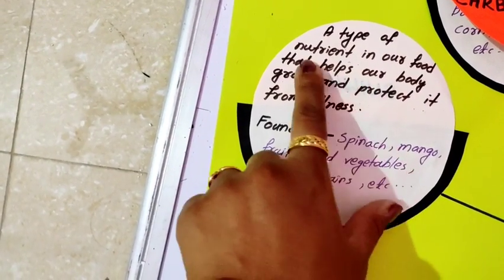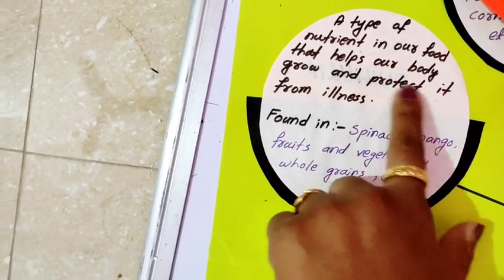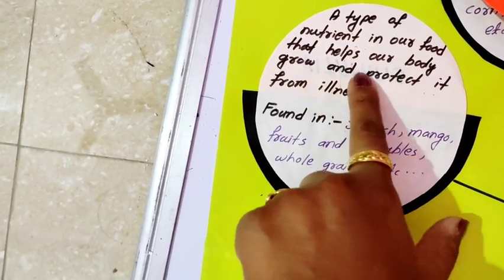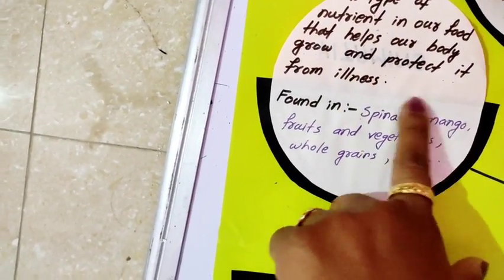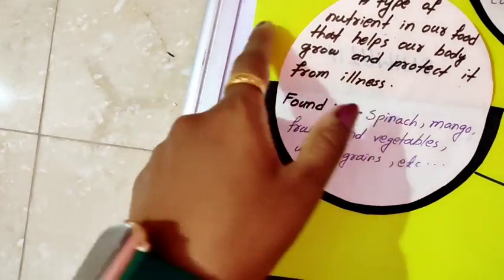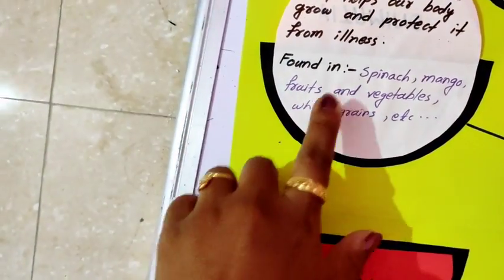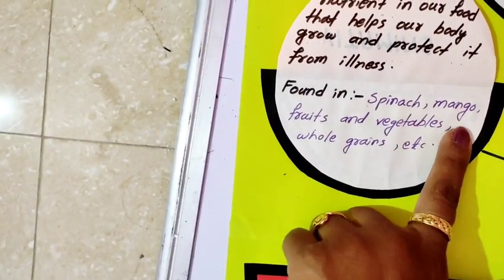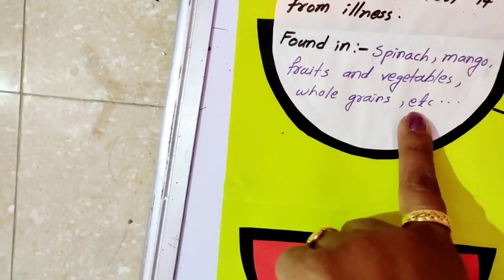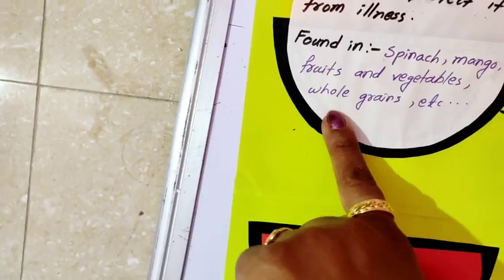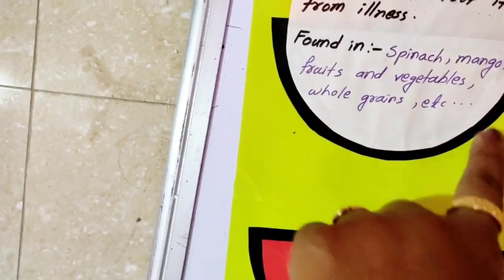This is a type of nutrient in our food that helps our body grow and protect it from illness. Found in spinach, mango, fruits and vegetables, whole grains, etc.